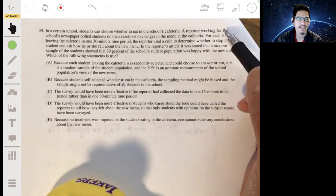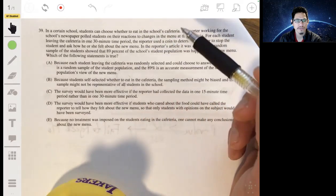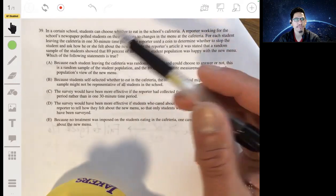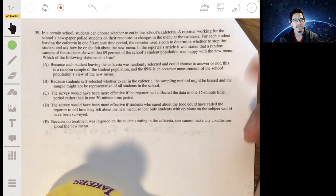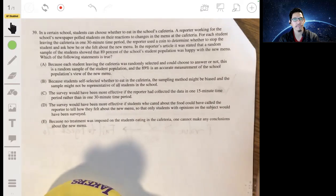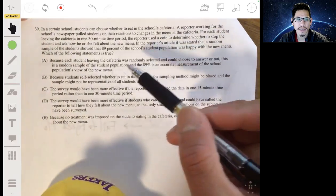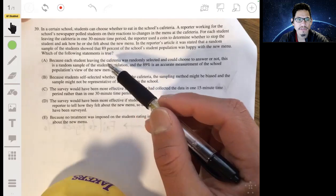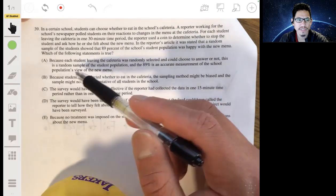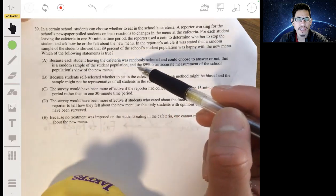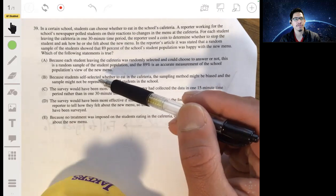In the reporter's article, it was stated that a random sample of the students showed that 89% of the school's student population was happy with the new menu. Which of the following statements is true? Alright, so this is going to be dealing with sampling properly. So let's look at A. Because each student leaving the cafeteria is randomly selected and could choose to answer or not, this is a random sample of the student population, and the 89% is an accurate measurement of the school's population view of the new menu.